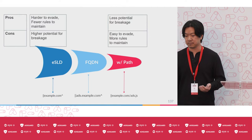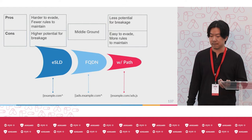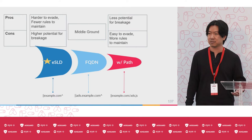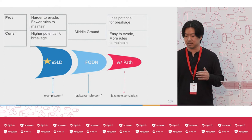For FQDN rules, we can consider them the middle ground that inherits the pros and cons of their neighbors. ESLD rules are preferred because of their pros, especially if they do not cause breakage. But if they do, then we can go more fine-grained to FQDNs and rules with paths. Rule granularity matters because of the tradeoff between the effectiveness of the rule and breakage.